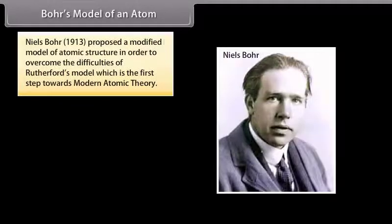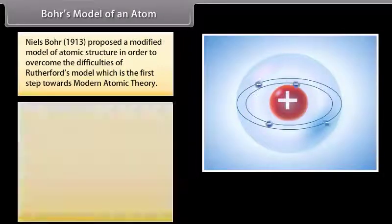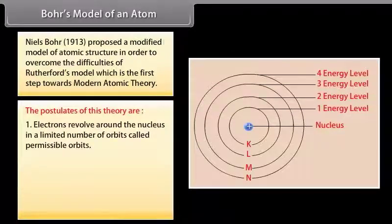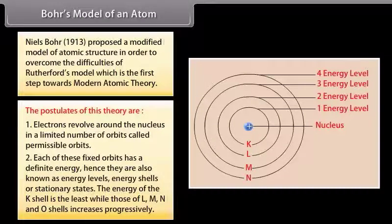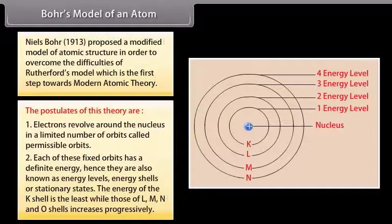Niels Bohr in 1913 proposed a modified model of atomic structure in order to overcome the difficulties of Rutherford's model, which is the first step towards modern atomic theory. The postulates of this theory are: 1. Electrons revolve around the nucleus in a limited number of orbits called permissible orbits. 2. Each of these fixed orbits has a definite energy, hence they are also known as energy levels, energy shells, or stationary states. The energy of the K shell is the least, while those of L, M, N, and O shells increase progressively.